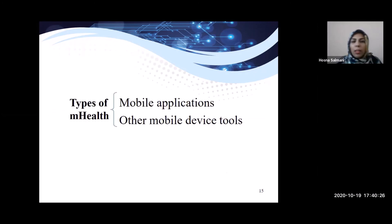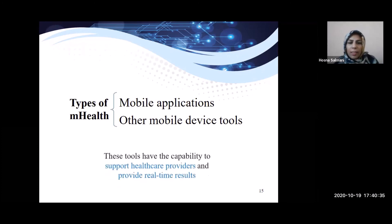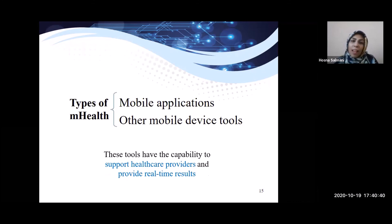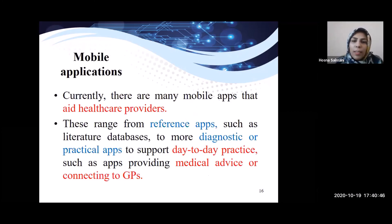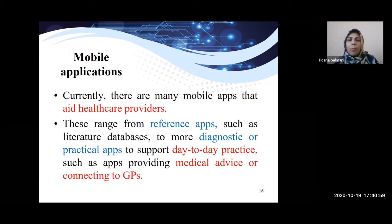There are two types of mobile health: mobile applications and other mobile devices. These tools have the capability to support healthcare providers and provide real-time results. Regarding mobile applications, there are many apps that aid healthcare providers, ranging from reference apps such as literature databases to more diagnostic or practical apps to support day-to-day practice, such as apps providing medical advice or connecting to GPs.